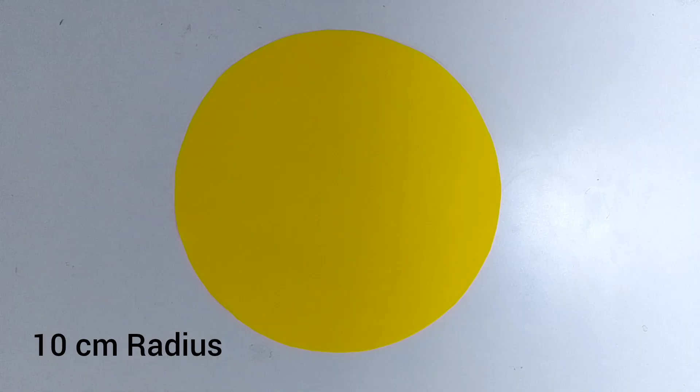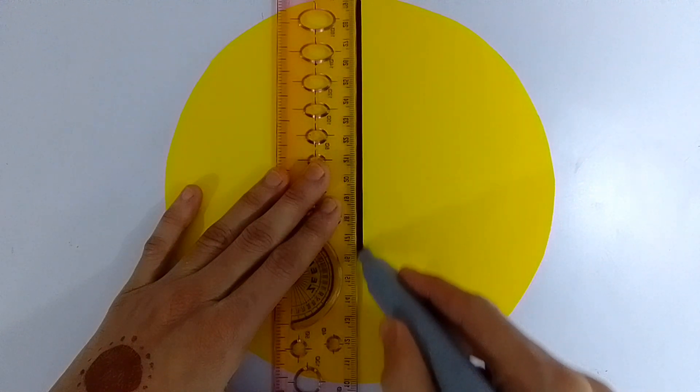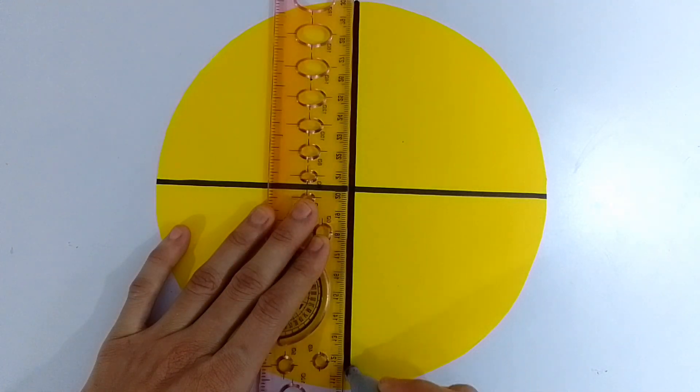First, I cut three circles from blue, red and yellow paper. Draw four lines on the yellow paper with marker to divide it into eight parts.